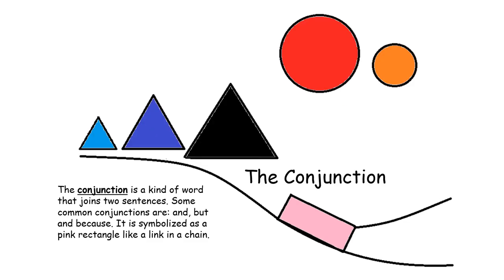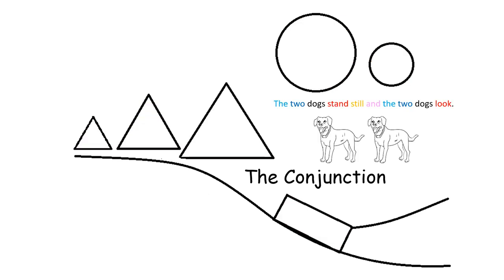The conjunction is a kind of word that joins two sentences. Some common conjunctions are and, but, and because. It is symbolized as a pink rectangle like a link in a chain. You can see here that I have colored the word and pink for the conjunction. It is a word that can join two complete ideas.